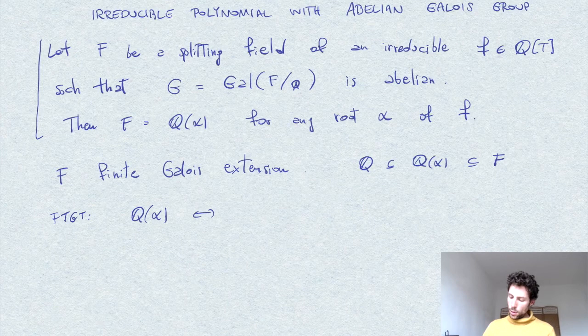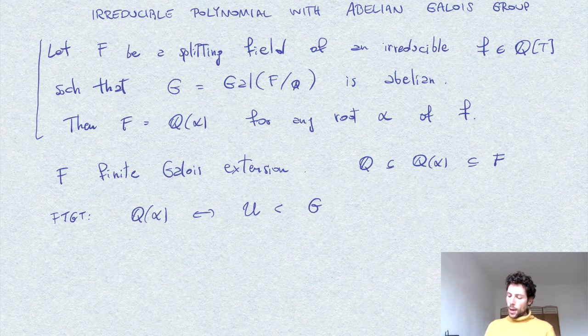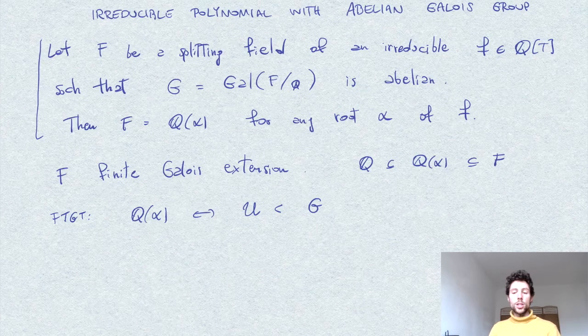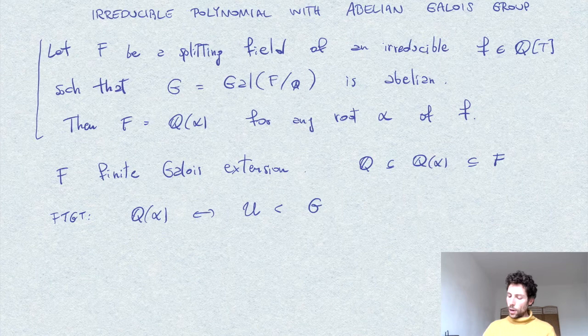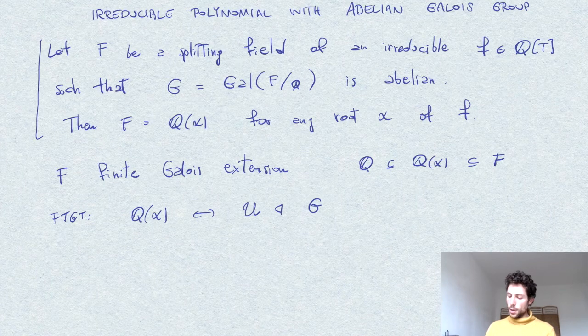And by assumption G is abelian and therefore every subgroup is a normal subgroup.